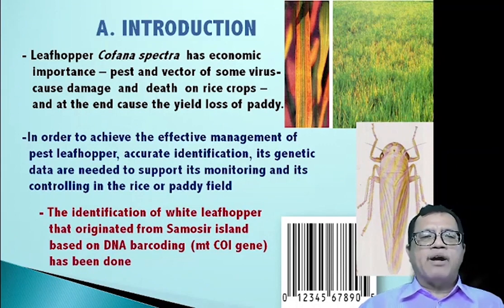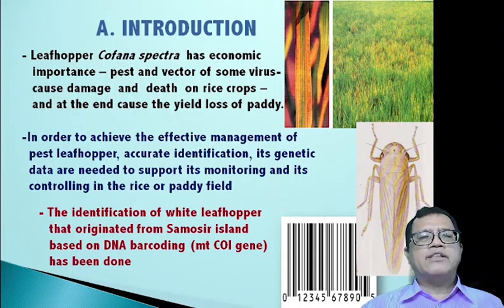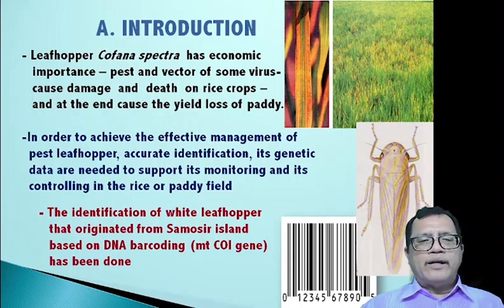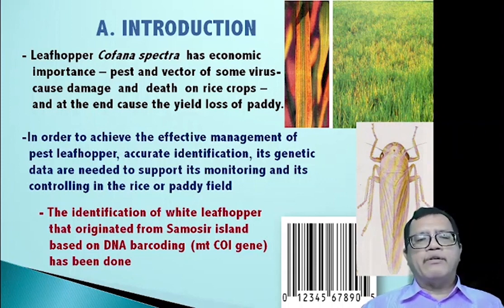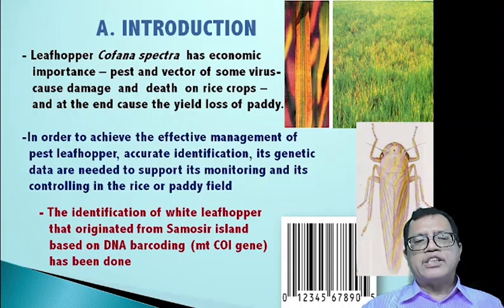The background of this research: the leafhopper Copana Spectra has economic importance because this leafhopper can act as a pest and a vector of some viruses that cause damage and death on rice crops, and at the end can cause the yield loss of paddy or rice. In order to achieve effective management, accurate identification and genetic data are needed to support monitoring and controlling in the rice or paddy field.